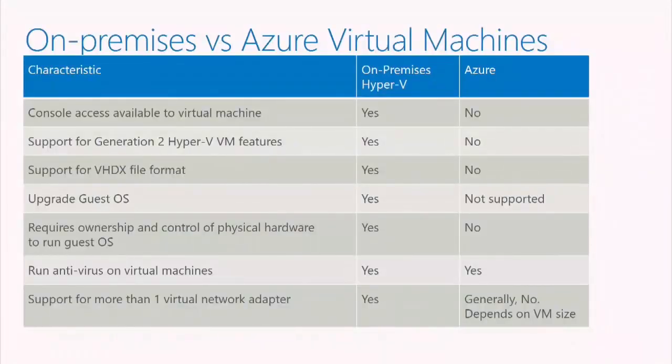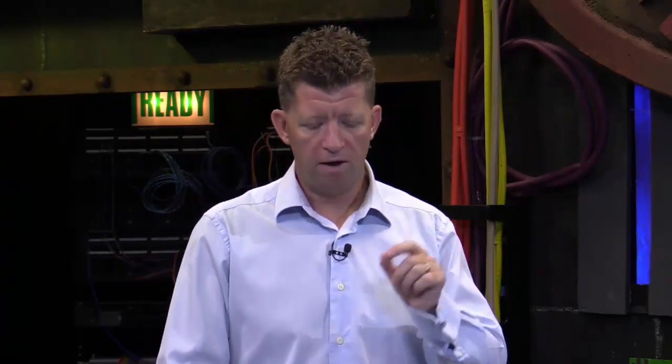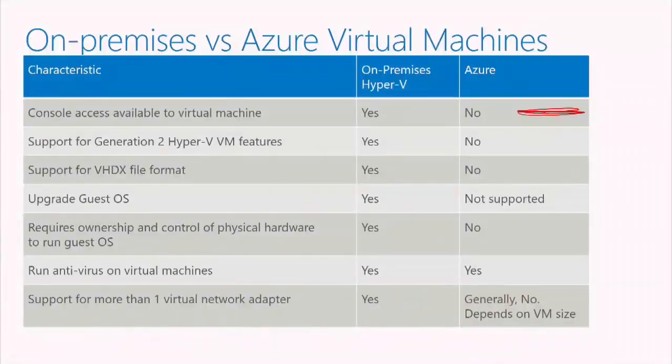The single biggest thing that most administrators get uncomfortable with is this notion that within Azure, there is no console access to a virtual machine. This is both a security design point and also a point of ensuring that no one else can get access to anything or see what's going on in your VM. The only way you get console access is if you run on Hyper-V. Within Azure, it's RDP access only. Additionally, only generation one virtual machines are supported.